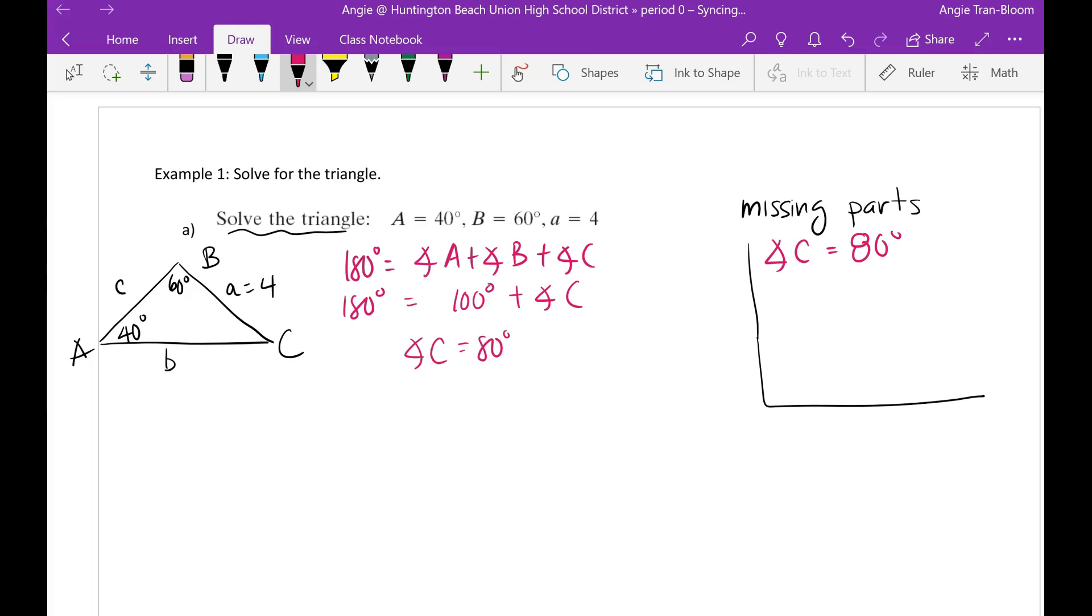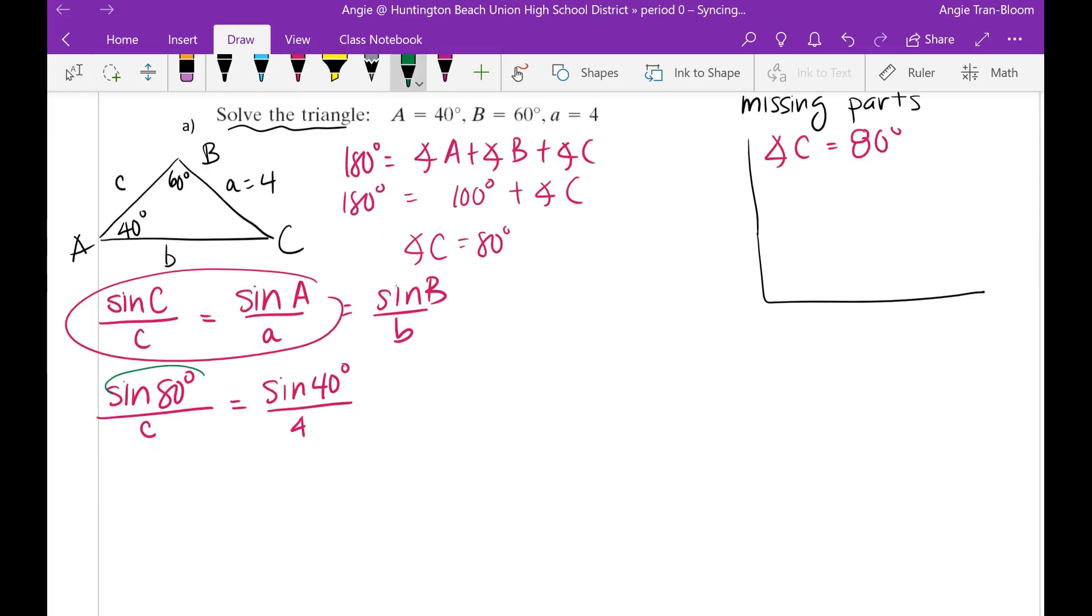Let's find your two missing legs, leg C and leg B. So let's use the law of sines. Since you know sine C over leg C equals sine A over leg A. Let's solve for it. Or even sine B over leg B. Let's do these two first. Angle C is 80 degrees, so sine of 80 degrees over leg C, which is unknown. Sine of angle A, A happened to be 40 degrees all over leg A, which is 4 units. And from here, you would definitely need to cross multiply.